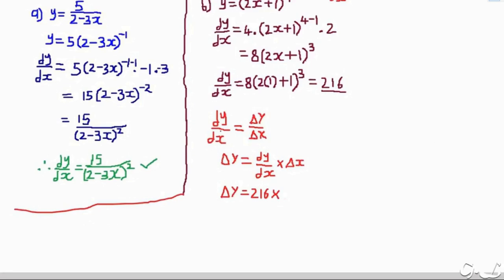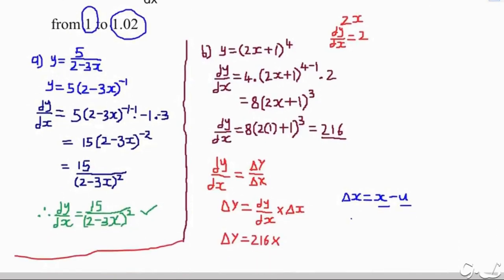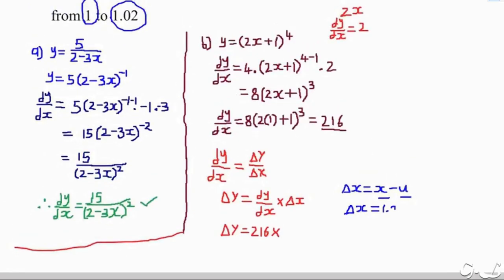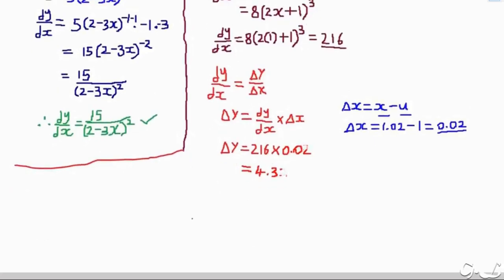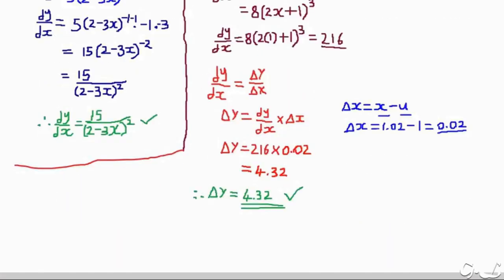The change in x equals the final value minus the initial value: 1.02 minus 1 equals 0.02. Therefore, change in y equals 216 multiplied by 0.02, which gives 4.32. So the approximate change in y is 4.32.